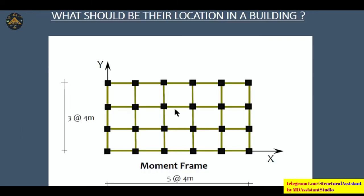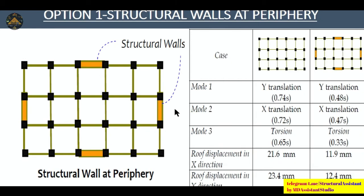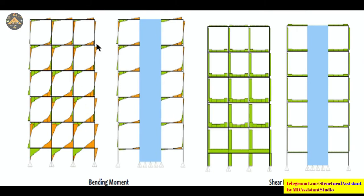Structural walls offer best performance on hard soil. The ideal location is to provide structural walls at the periphery. In a case study, after providing peripheral structural walls, the x-translational time period reduced from 0.72 to 0.47 s, the y-direction period reduced from 0.74 to 0.48 s, and the torsional period reduced significantly from 0.65 to 0.33 s. Most significantly, the roof displacement in the x-direction decreased from 21.6 mm to 0.9 mm, and along y from 23.4 mm to 12.4 mm.